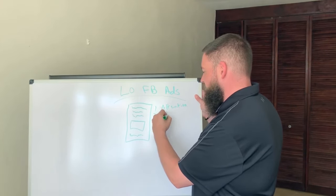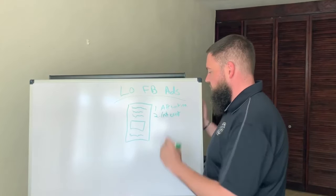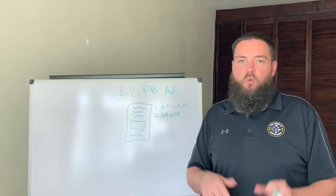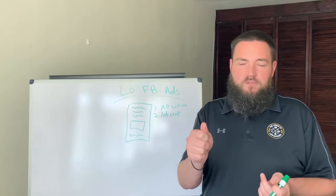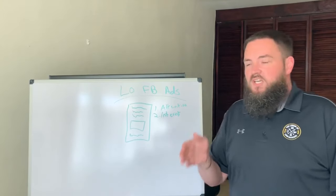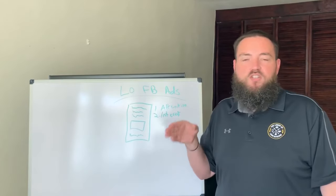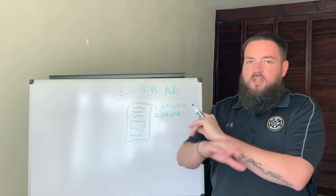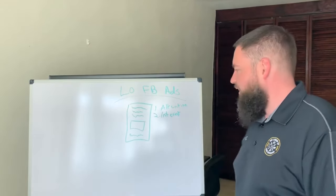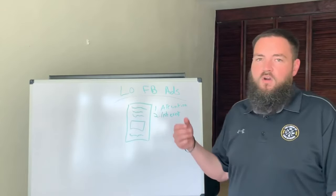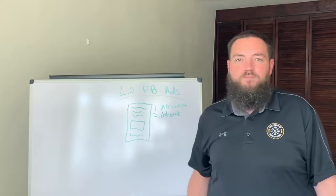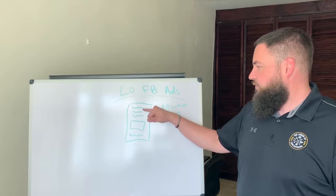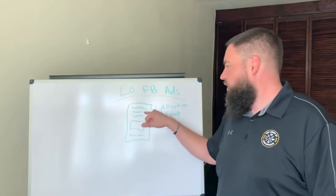The second line is to get their interest. Once you've got the thumb stopper and they're reading the first line, the second line is to really let them know what this is actually about. So the first line is like 'excuse me, is this you?' and the second line says 'here's what I'm talking about.' It's talking about either the property you're advertising or a new special program available for them — whatever your offer is. The offer, and how we're going to gather their interest, is going to go on that second line.